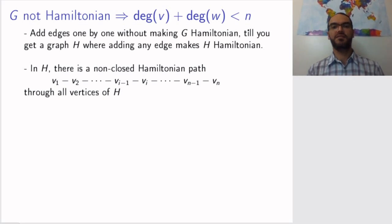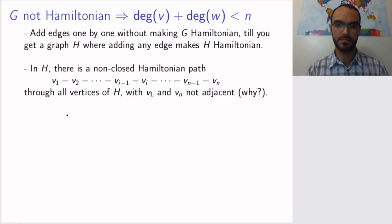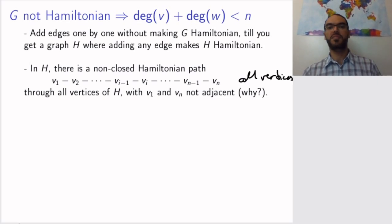In this graph, we have a non-closed Hamiltonian path from v₁ to vₙ. Why? Because if I add an edge, I will make it Hamiltonian. So if I add an edge, I will get a Hamiltonian cycle, meaning that without this edge, I don't have a Hamiltonian cycle, but I have a Hamiltonian path that goes v₁, v₂, ..., vₙ. Now v₁ and vₙ are not adjacent. Why? Because if they were, then I would have a Hamiltonian cycle. So I have these non-adjacent vertices, and these are all the vertices of H, because a Hamiltonian path goes through all vertices. I might have other edges here and there in the graph, but I don't have other vertices.